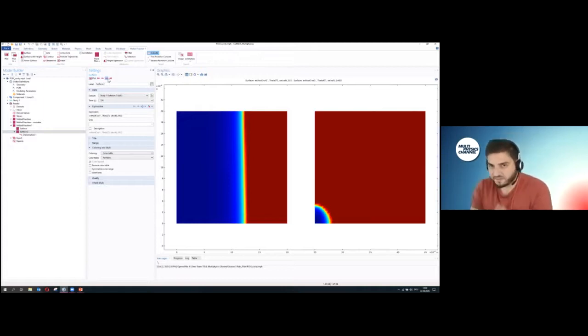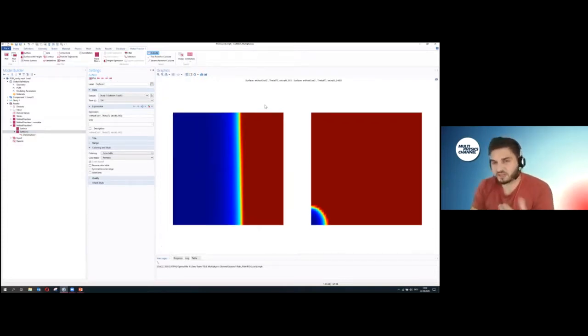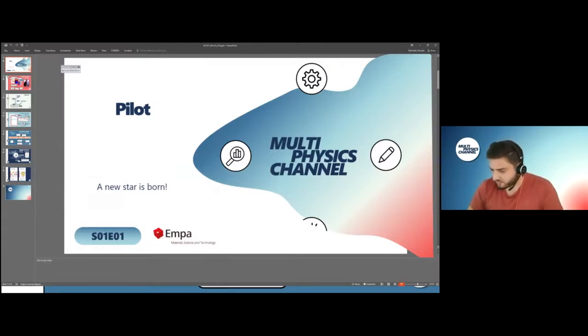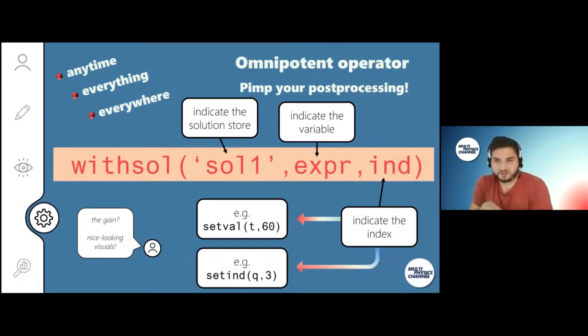That's a neat way to export afterwards, without the grid here, export the picture and paste it somewhere else where you need it. That's the feature of the withsol operator if you want to pimp your post-processing a bit. I recommend you have a look at it. Maybe give us some feedback about what you think.